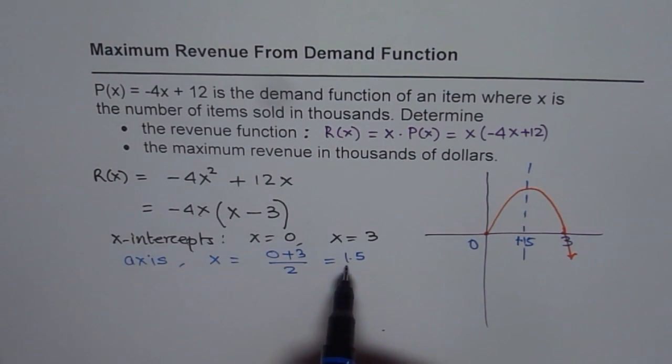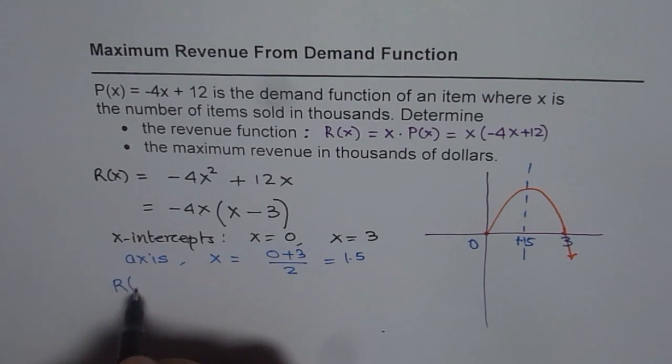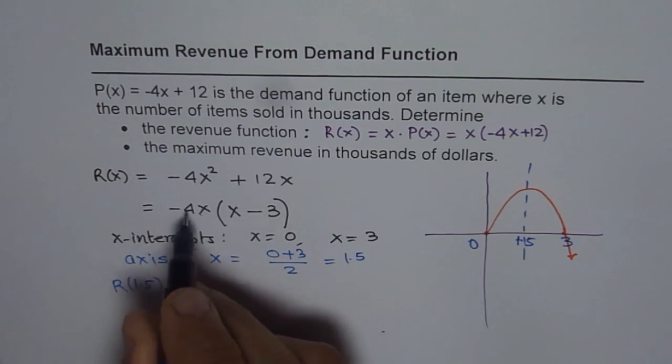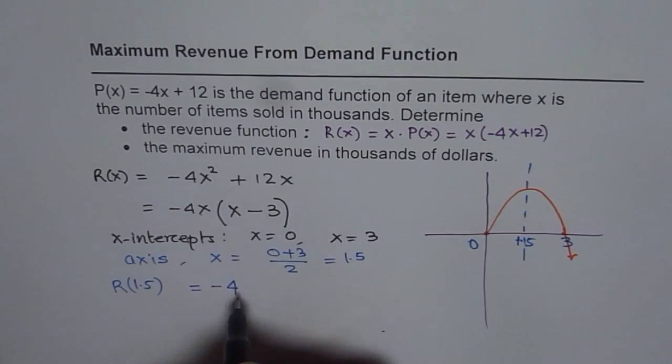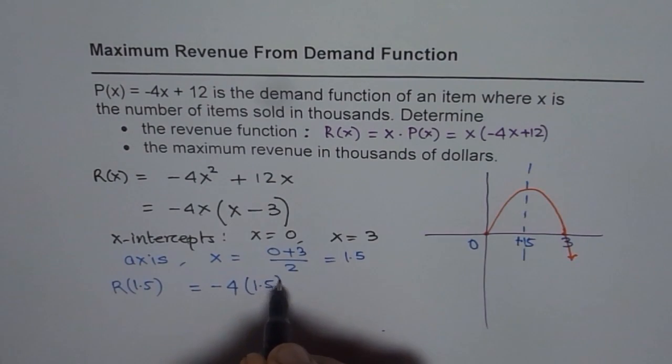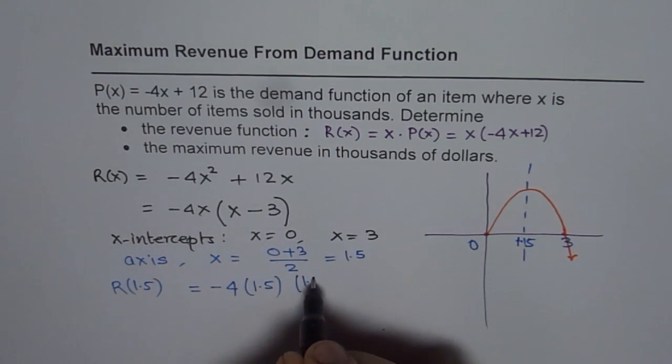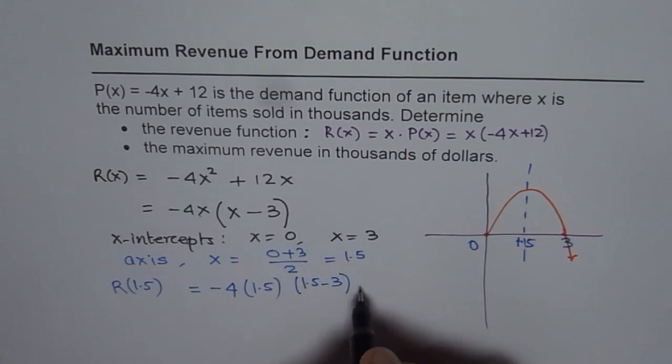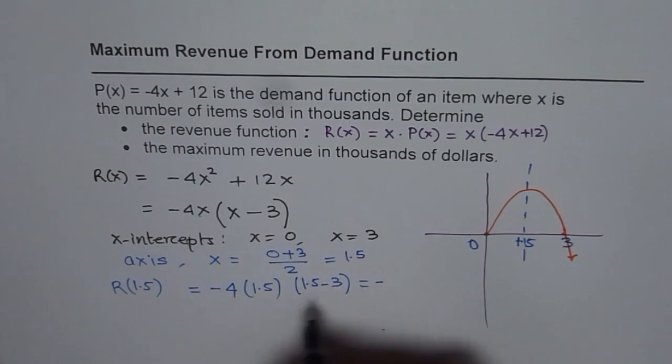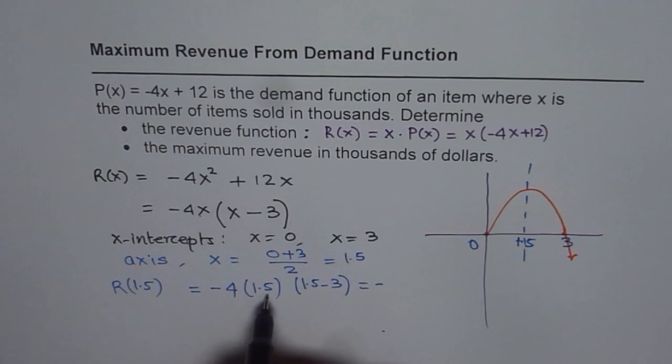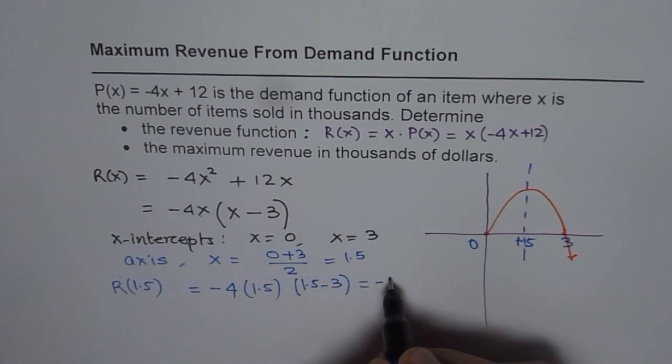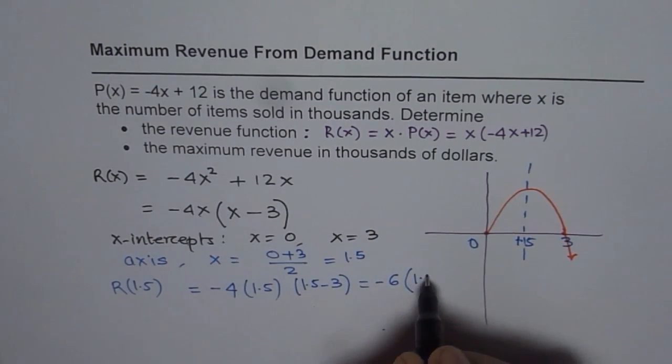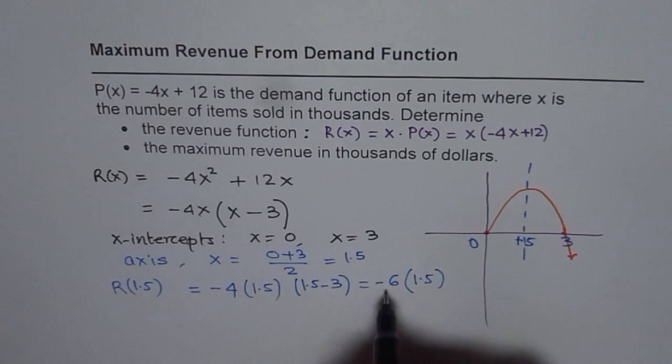So revenue will be how much? The maximum revenue will be R(1.5), which equals to, we can replace x with 1.5 and find our answer, right? So this is -4 times 1.5. 4 times 5 is 22, 4 times 1 is 4 and 2, 6.